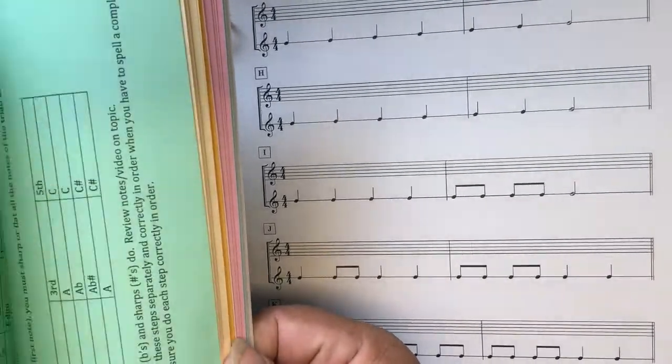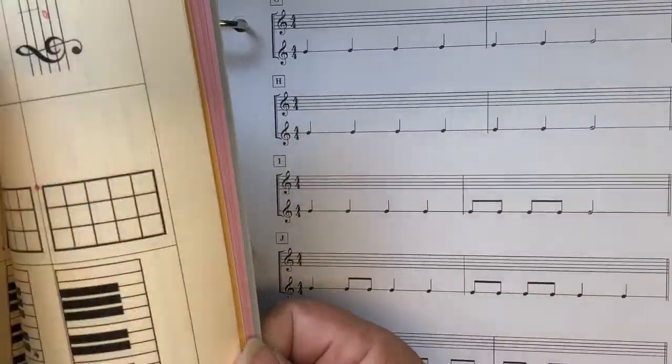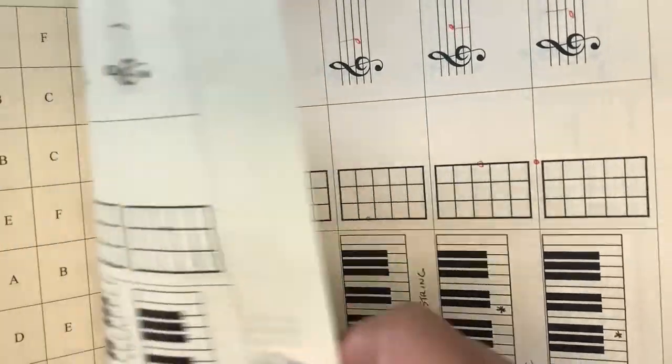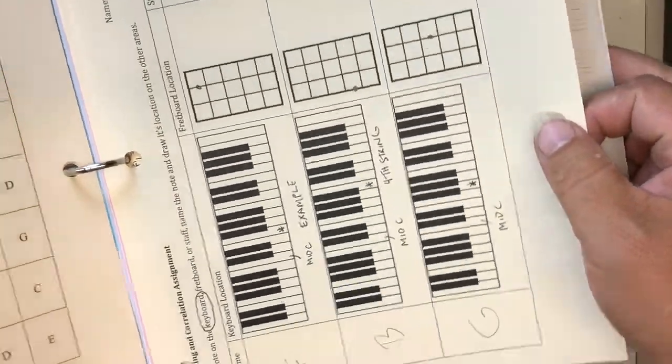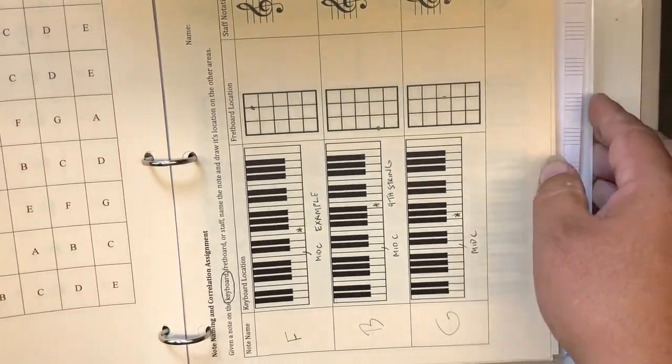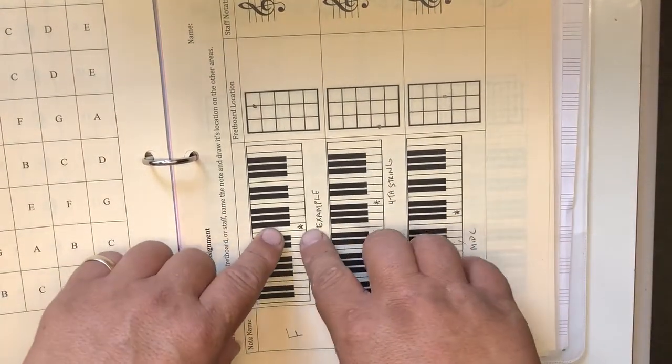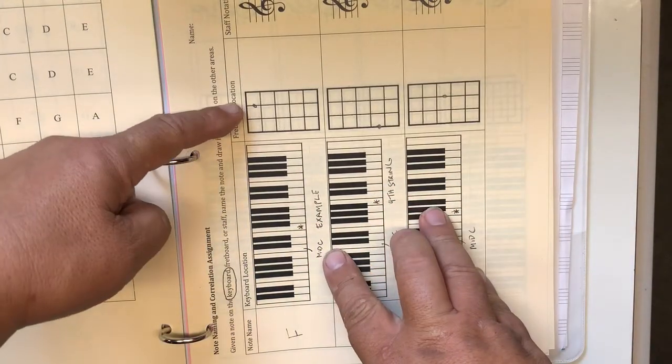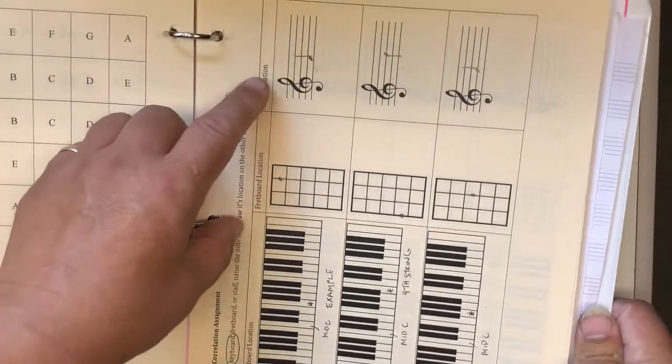So if you remember in your packet—I designed these packets so you'd be able to be trained properly—in the light yellow section, there's these quizzes that coordinate and corroborate things. So this note is given on the keyboard right there, and you see, oh, it's an F. You find it on the fretboard right there, and you write it on the staff.